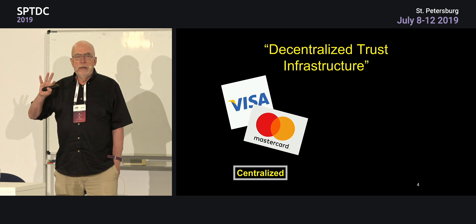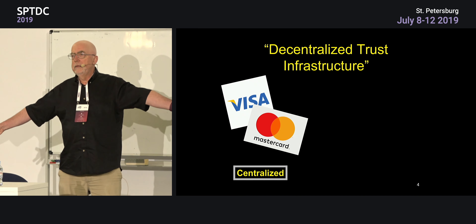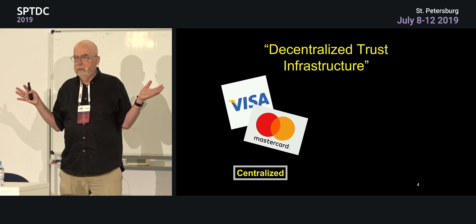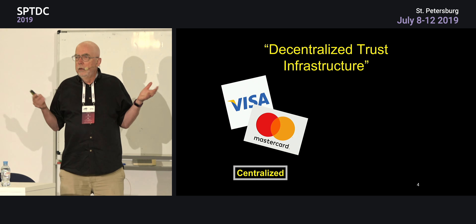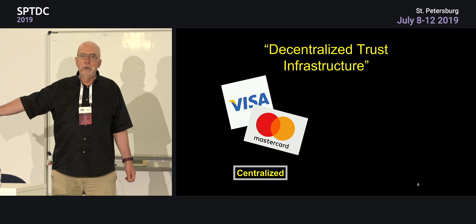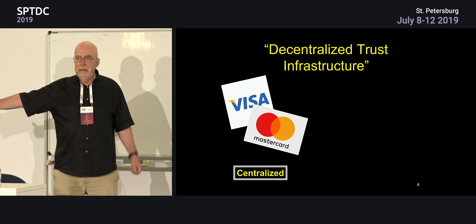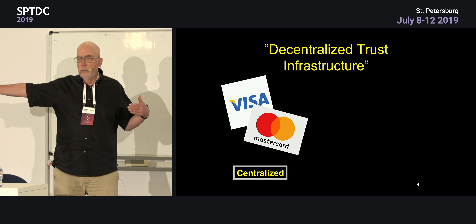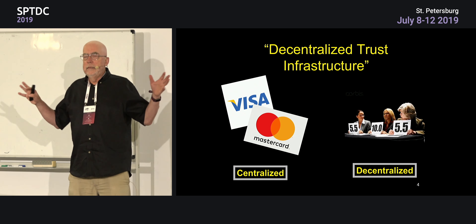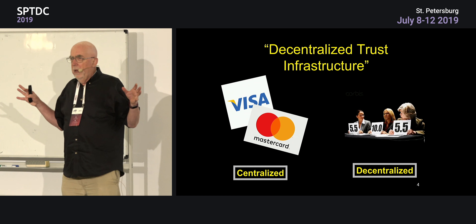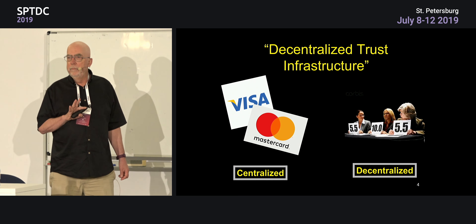The idea is that if we want to build a financial world where corporations, governments, and other organizations can't control what we do, we have to be decentralized. A centralized financial system is Visa and MasterCard — I try to buy something, Visa checks whether my credit is good and whether the merchant is honest. Decentralized means that decisions are made collectively, and decentralized is viewed as being more secure because it's harder to corrupt multiple parties than a single party.